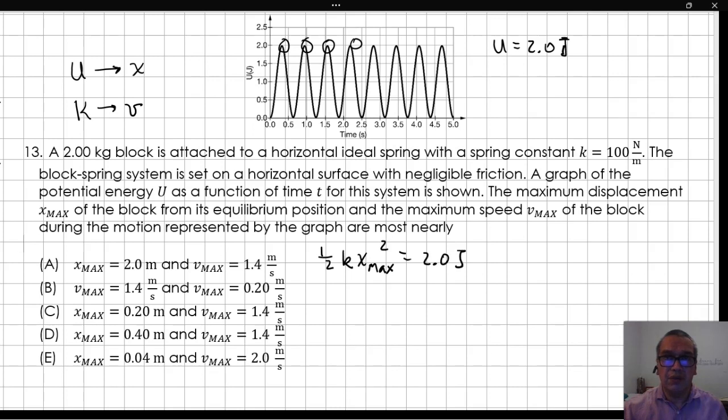Solving for Xmax gives us the square root of 2 times 2.0 joules divided by 100 N/m, or 0.20 meters.